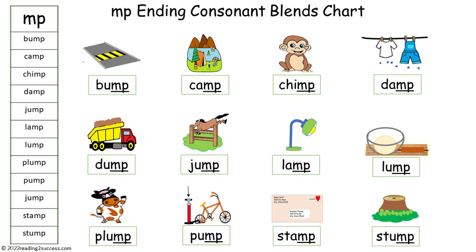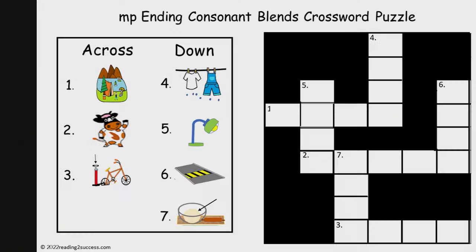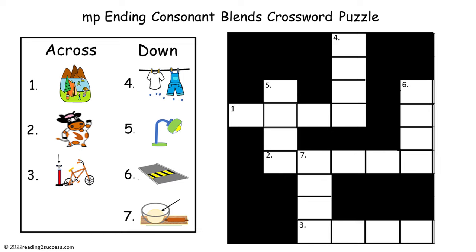Now with kids, read the words on the ending consonant blends chart: bump, camp, chimp, damp, dump, jump, lamp, lump, plump, pump, stamp, and stump. Now have kids complete the MP ending consonant blends crossword puzzle.